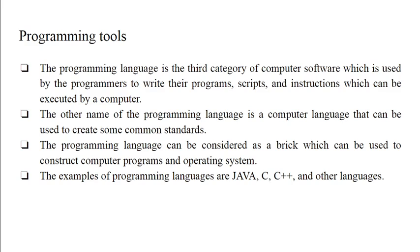The next type of software is programming tools. All software are sets of instructions or programs. A programming language is the third category of computer software, used by programmers to write programs, scripts, and instructions which can be executed by the computer. The other name is computer language, and it can be used to create common standards.